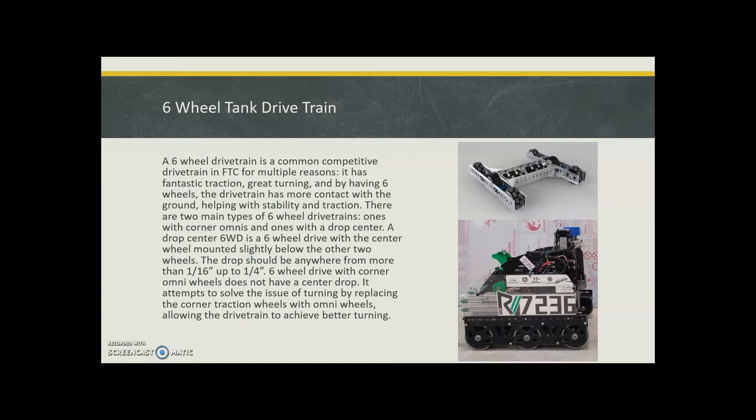There's two main types of six wheel drive trains: drop center and corner omni. A drop center 6WD has a center wheel mounted slightly below the other two so that it's touching the ground. This drop should be anywhere from one sixteenth of an inch up to a fourth of an inch.